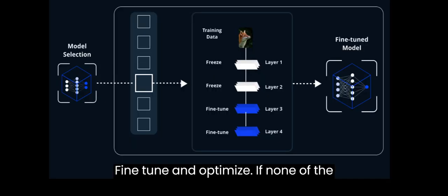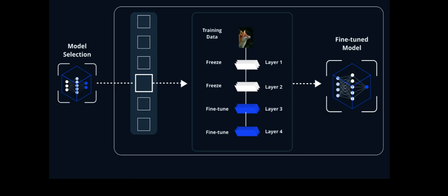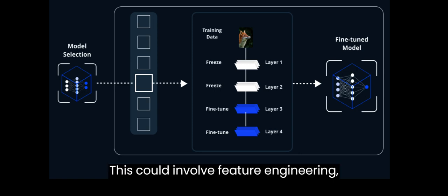Fine-tune and optimize. If none of the models meet the desired performance or real-time requirements, consider additional steps to fine-tune and optimize the selected models. This could involve feature engineering, data preprocessing, model architecture modifications, or deploying more advanced techniques like model compression or quantization to reduce model size and improve inference speed.